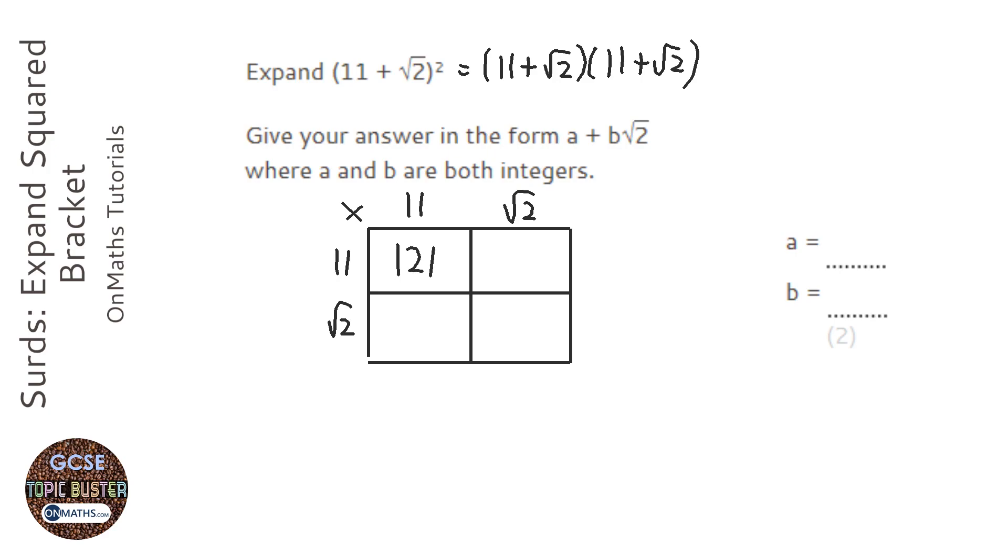11 times 11 is 121. 11 times root 2 is 11 root 2. 11 root 2. And root 2 times root 2 is root 4 which is just 2.